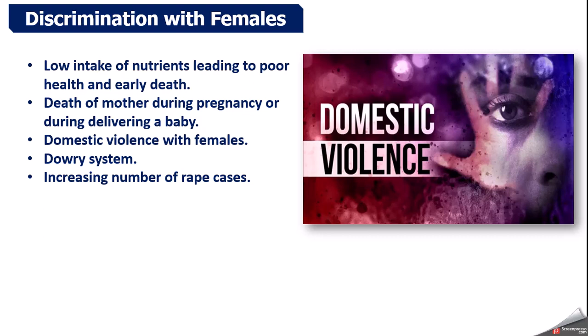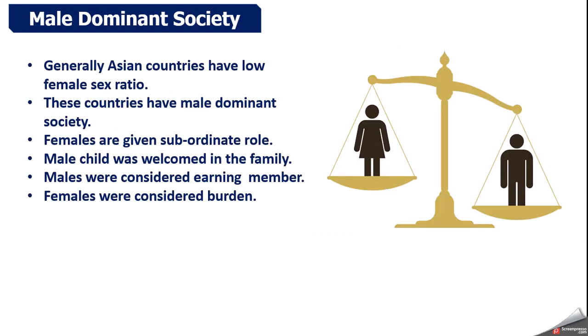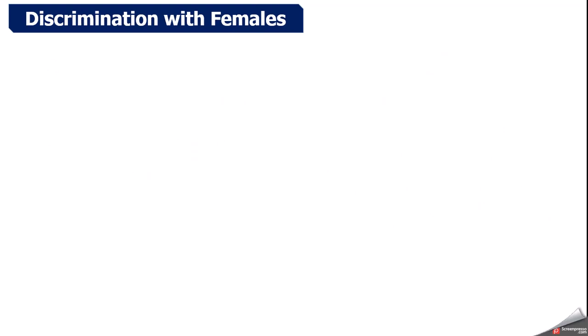खास तौर पर हमारे देश में — जब लड़की के पिता अपनी बेटी की शादी करने के लिए बात करते हैं, तो दहेज की माँग की जाती है। इसलिए लोग सोचते थे कि बेटी होगी तो दहेज देना पड़ेगा, बड़ा बोझ होगा। और अगर लड़का होगा तो दहेज मिलेगा। इस वजह से लोग लड़के का जन्म चाहते थे। इस तरह के discrimination के कारण महिलाओं की संख्या कम हो जाती है। पहला — male dominant society; दूसरा — discrimination with females।